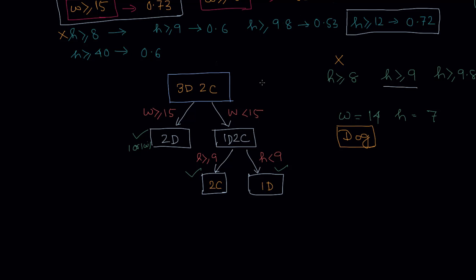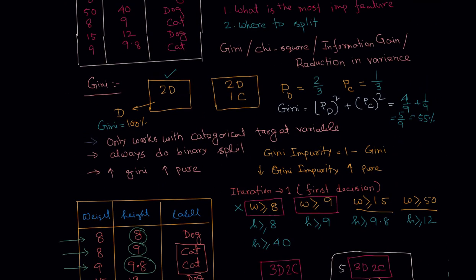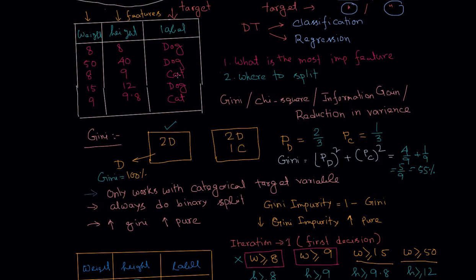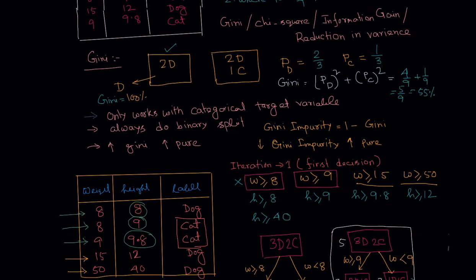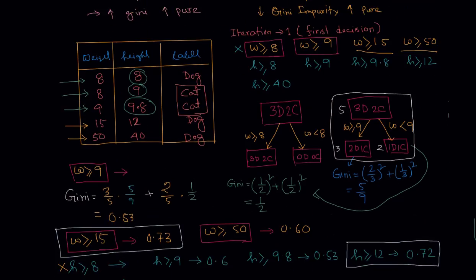In future videos, we'll see how to apply other algorithms like chi-square, information gain, and reduction in variance, each of which has its own pros and cons. Based on our scenario, we should pick the appropriate algorithm. This is how decision tree algorithm works in a nutshell.